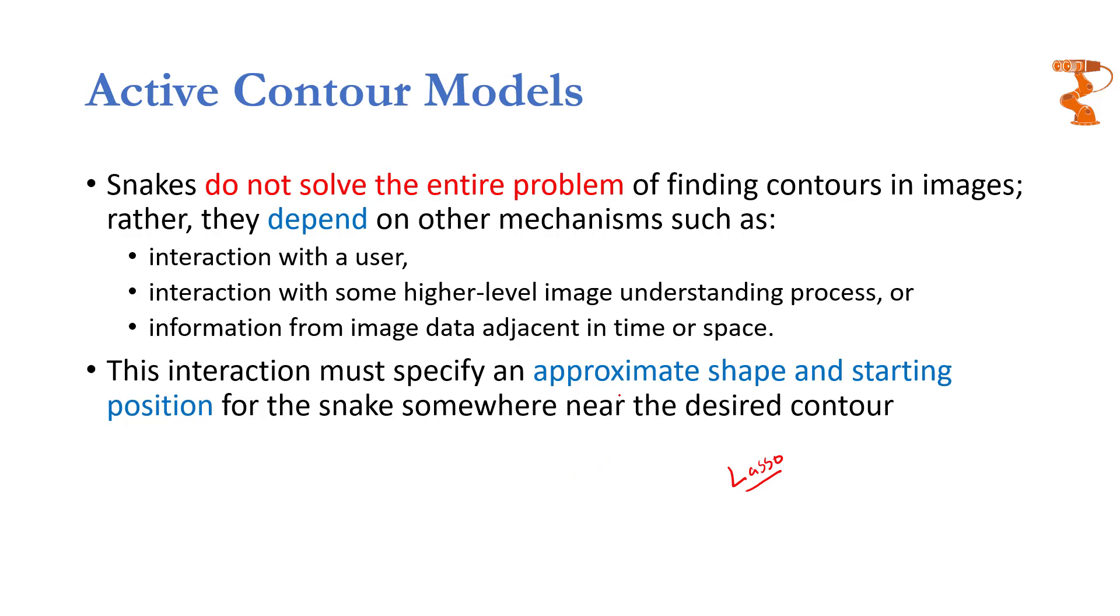That lasso tool is nothing but an active contour model. For example if you are using that software to select this image of the robot, then you can use a lasso tool to select it. But for selection you need to have a selection path around it. You are going to use a lasso tool, click somewhere near this robot, and the selection tool will start. Then later on you will click somewhere over here, and keep on clicking at the boundaries or at the contours of this robot.